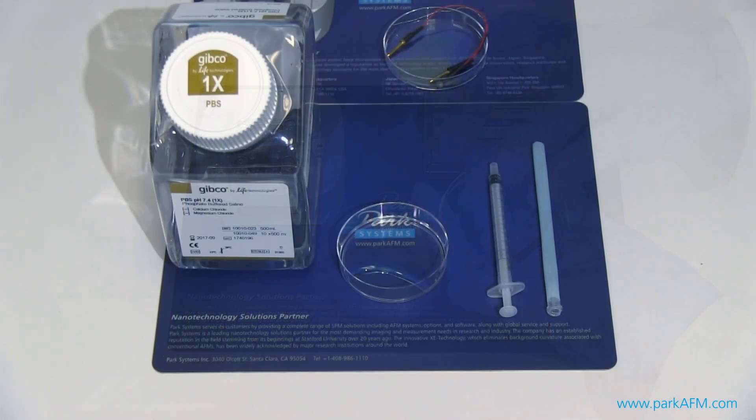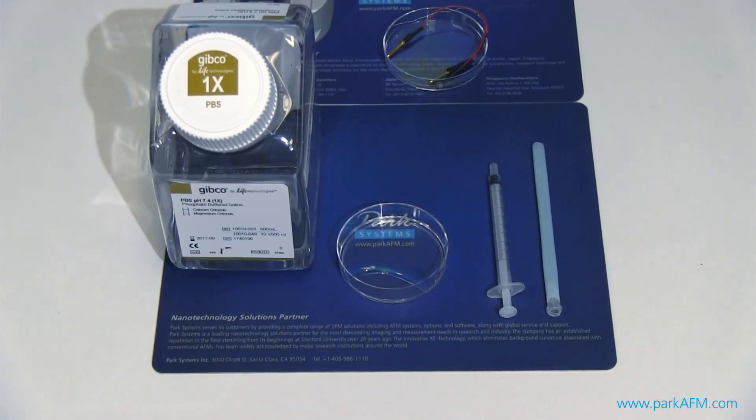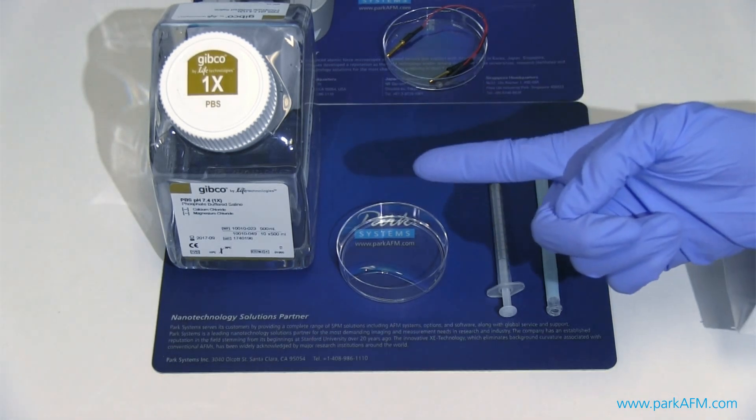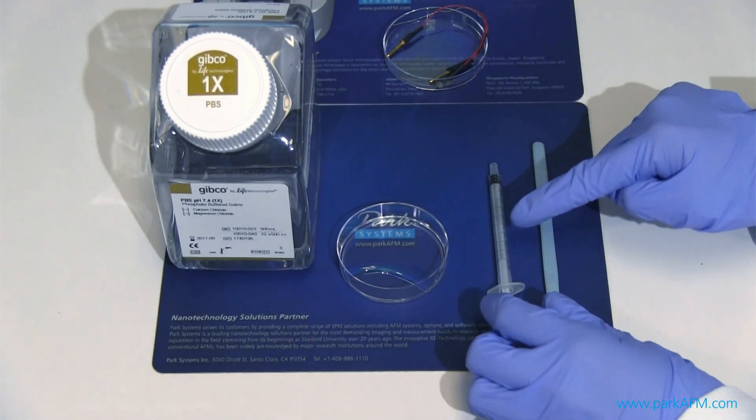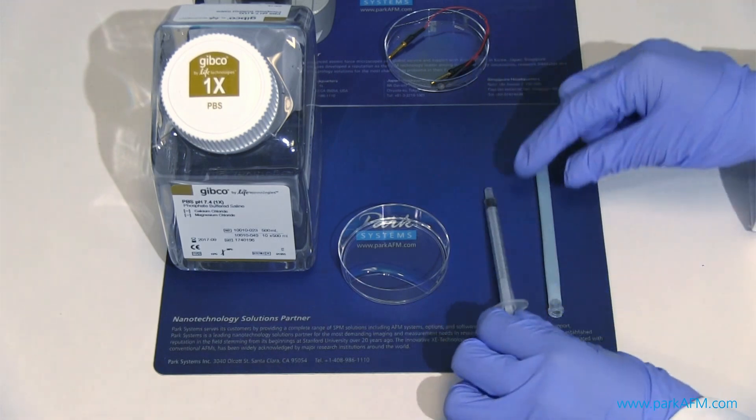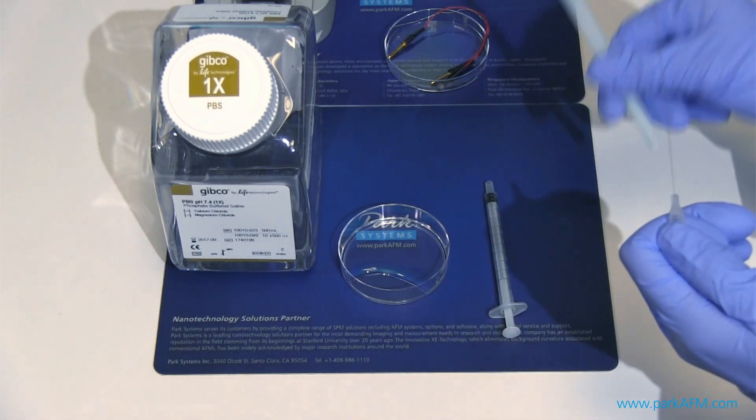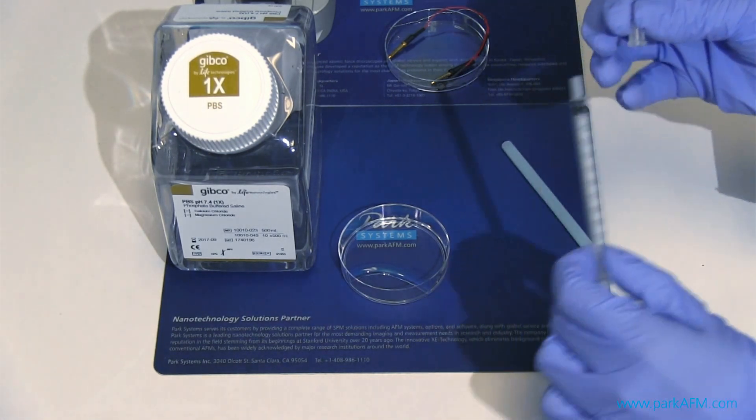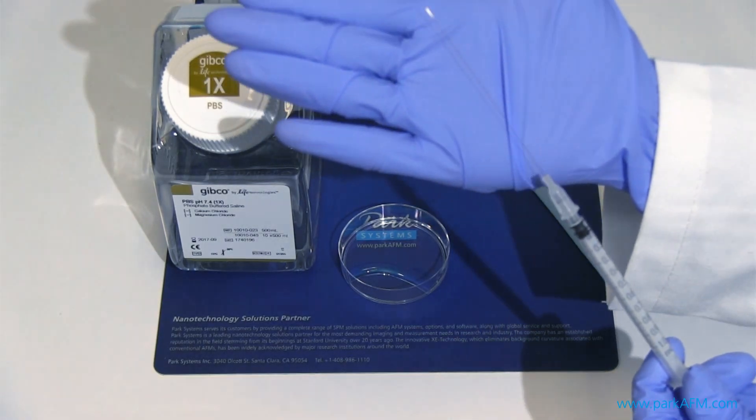Here is the electrolyte solution we use for our experiment, the phosphate buffer saline solution. We use a one milliliter syringe and a metal needle to fill up the nano pipettes two-thirds of the way up with the solution.